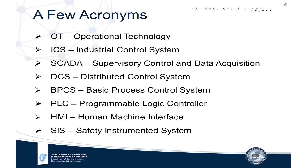A few key acronyms: OT is operational technology; ICS is industrial control system — these are all computing systems used in an operational environment. SCADA, or supervisory control and data acquisition, is used to control dispersed assets geographically spread out, like the electricity grid or gas pipelines. It's generally more concerned with data acquisition than control.